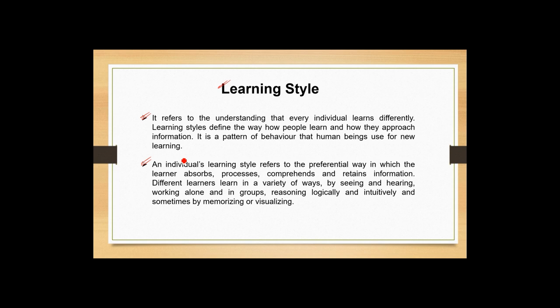Different learners learn in a variety of ways — by seeing and hearing, working alone and in groups, reasoning logically and intuitively, and sometimes by memorizing or visualizing. In simple words, a learning style is the unique way of learning that a person has. For example, if you give students a chapter to study, some students will read each line very loudly and that's how they memorize. Some students will silently read it in their mind. Some students relate pictures to the concept they are studying. So every student has their own comfort zone for approaching a subject, and that becomes their learning style.